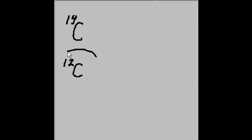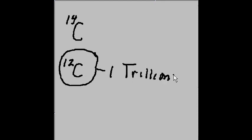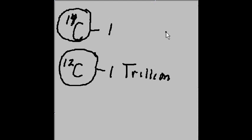In the previous video, we established that there were C-14s and C-12s. The C-14s and C-12s live in a ratio: for every one trillion C-12s in the atmosphere, there is one carbon-14. That is the constant ratio maintained between these two carbons — one carbon-14 per one trillion carbon-12s.